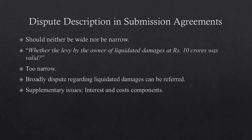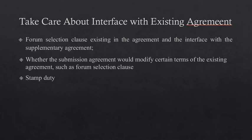Take care to include supplementary issues such as interest and costs within the scope of such dispute, as interest can also be a huge amount. You should also take care about forum selection clauses existing in the agreement and their interface with the submission agreement. It is possible that a forum selection clause in the existing agreement might interfere with or affect the place of arbitration. Another aspect is whether the submission agreement would modify certain terms of the existing agreement such as forum selection clauses — this also needs to be taken care of. If the submission agreement provides for a forum selection clause not in accordance with the original agreement, there would be problems.